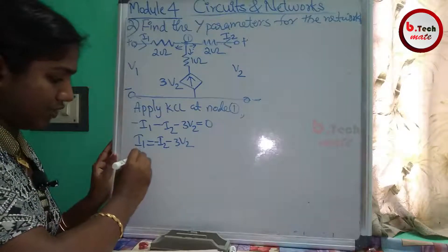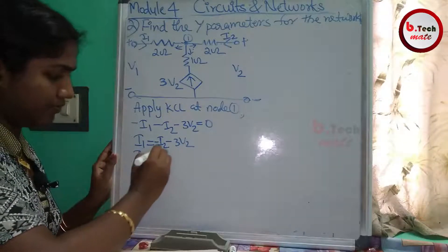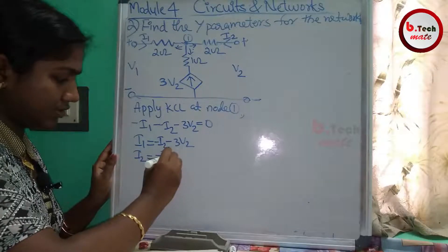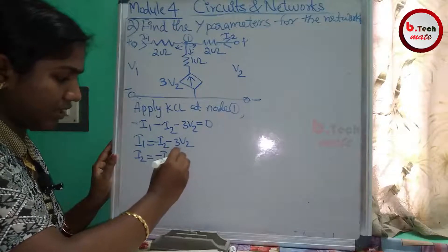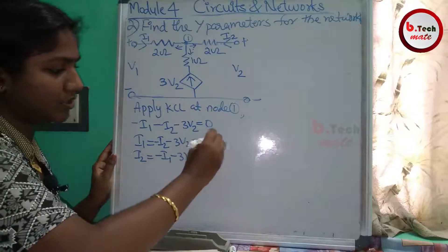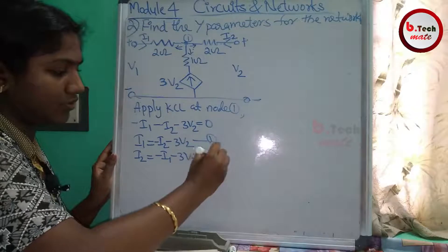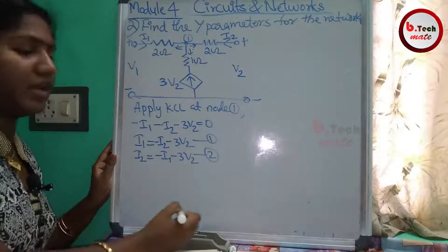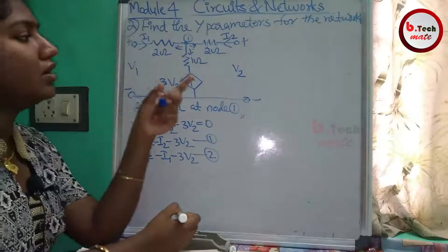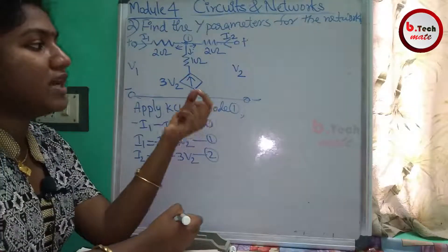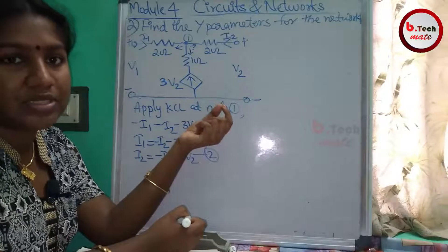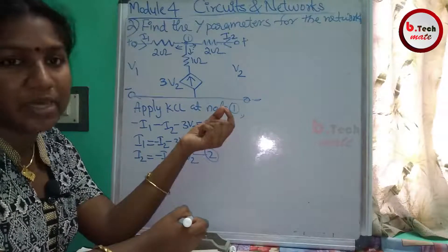From the KCL analysis, i2 equals minus i1 minus 3V2. This is equation number 1 and this is equation number 2. Now we have two equations. If we have to find the y-parameters, that is the short-circuit admittance parameters.